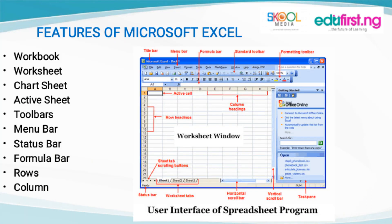So let us talk about the features of Microsoft Excel. We have the workbook, the worksheet, the chart sheet, the active sheet, the toolbars, the menu bar, status bar, formula bar, rows, and columns. I have an image beside it that shows all the features labelled. So just take your time and study it.